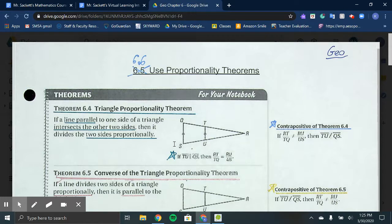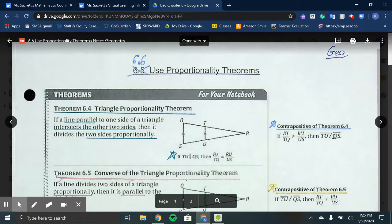You can see down here with the star section, if TU is parallel to QS, then RT over TQ is equal to RU over US. That is your proportionality statement. On the right, you can see the contrapositive to that theorem going in reverse, where if sections are not proportional, then they are not parallel.